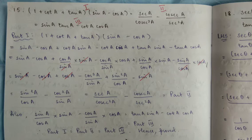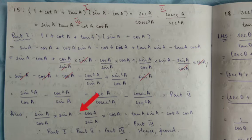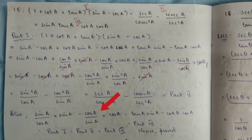So part 2 gives sin²A by cos A minus cos²A by sin A. Part 1 — that is the second last step. Part 3: sin by cos multiplied — sin A by cos A into sin A — so cos A into cos A. cos A by sin A into cos A. Next step: sin by cos is tan, cos by sin is cot. So you get tan A sin A minus cos A cos A, which is equal to part 3. So parts 1, 2, and 3 are equal. Hence proved.